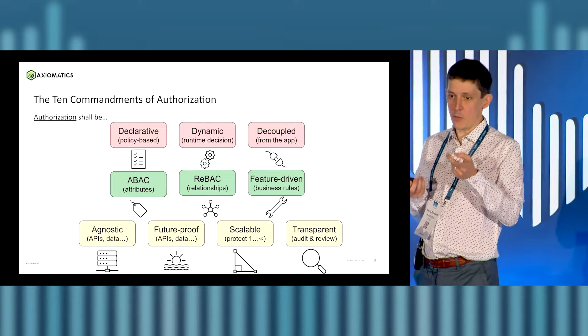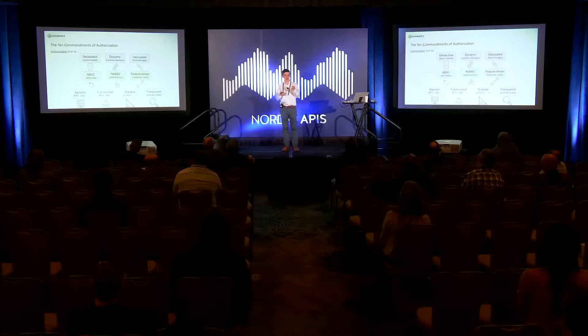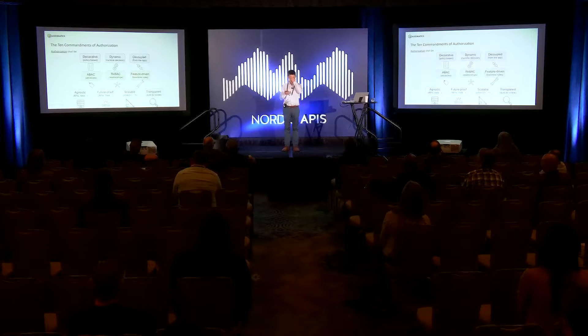The second thing is you want authorization to be dynamic at runtime — that's what you'd call trust but verify, or zero standing privilege. One of the issues with OAuth is that you tend to have a relatively long-lived token that you carry with you. But actually, you should be verifying every single time that whatever it is you're trying to do, you're allowed to do. So: dynamic runtime authorization.